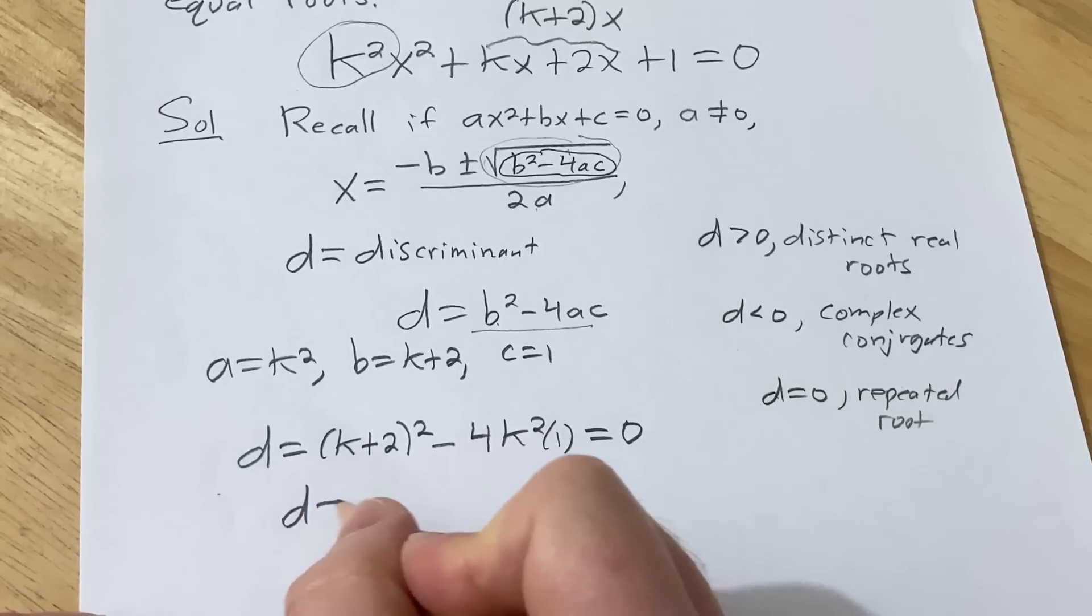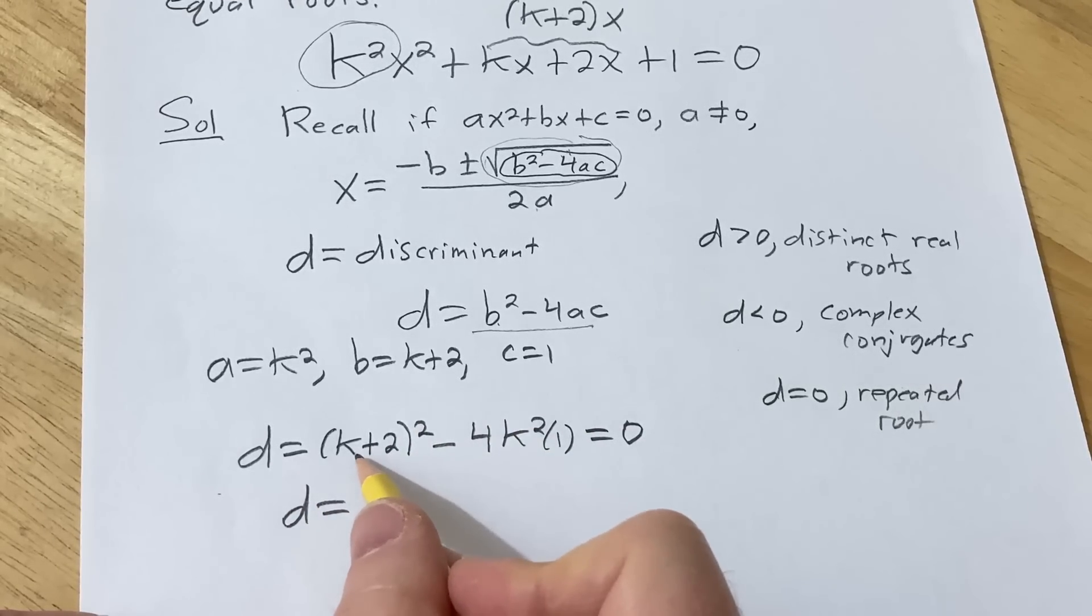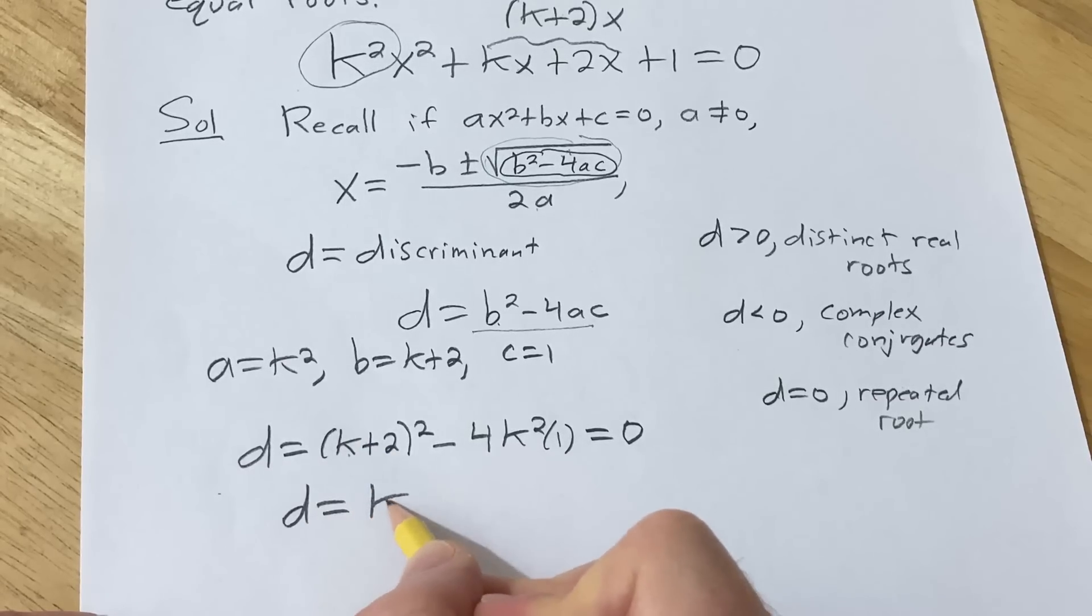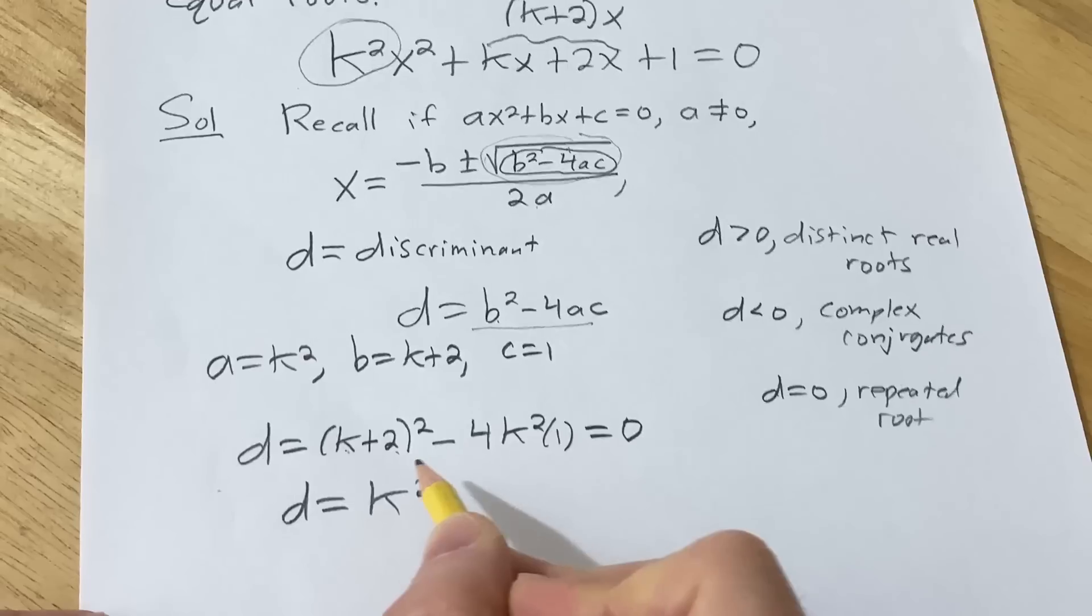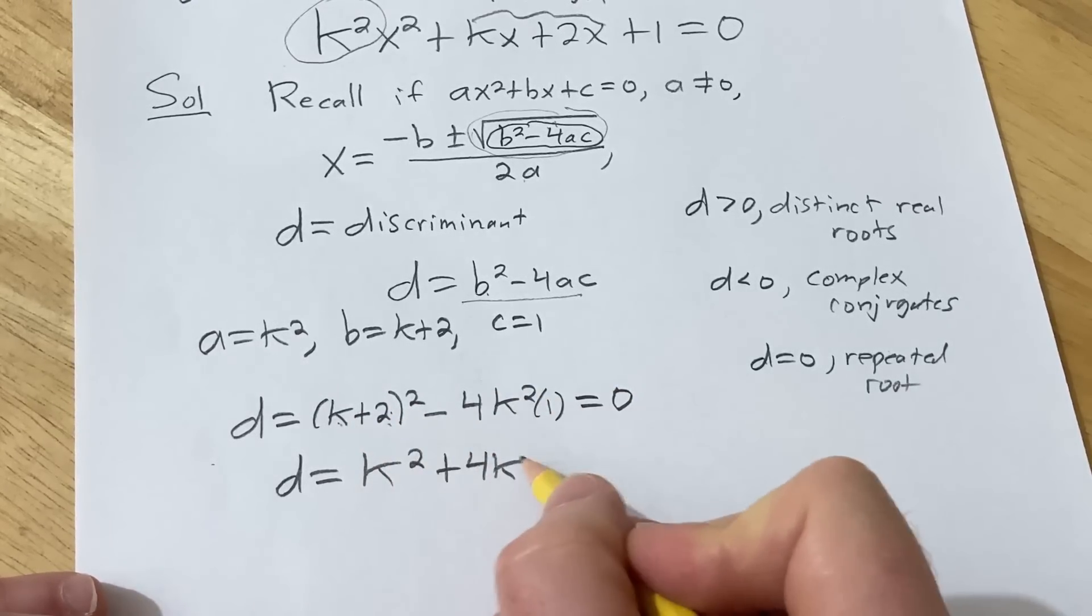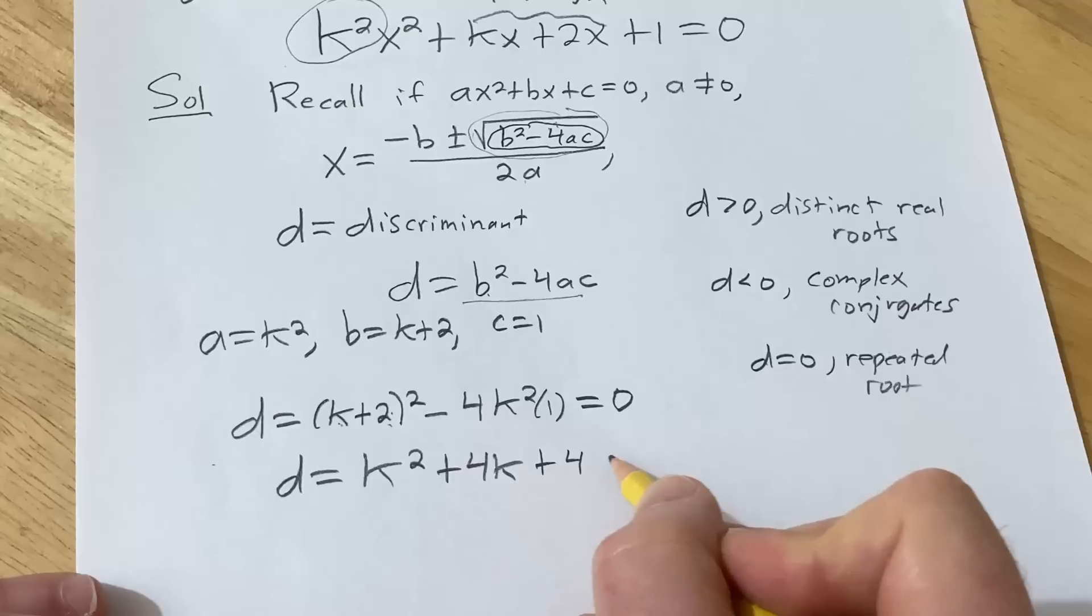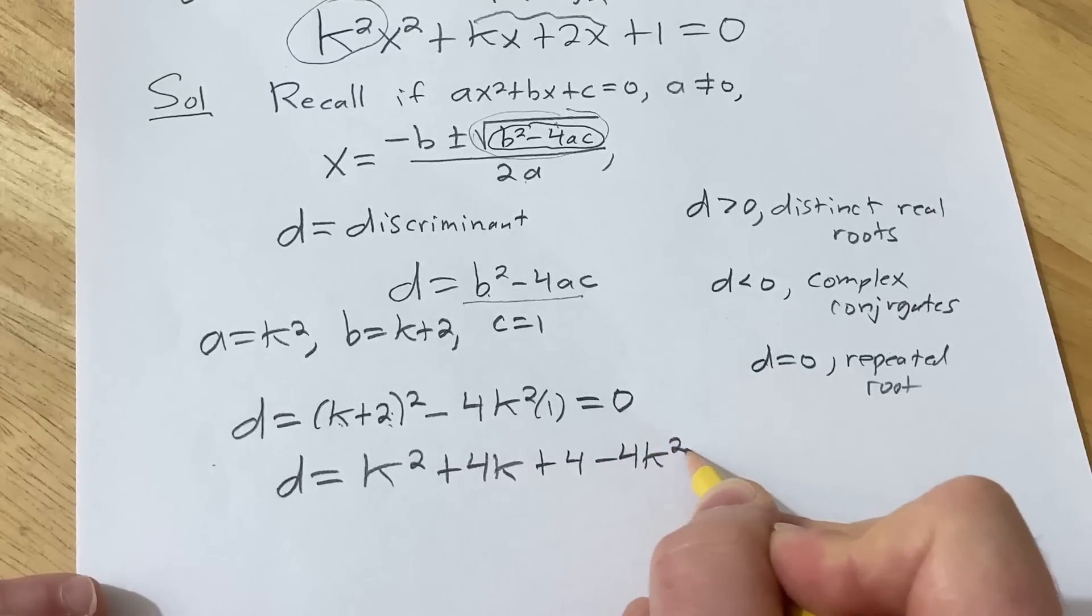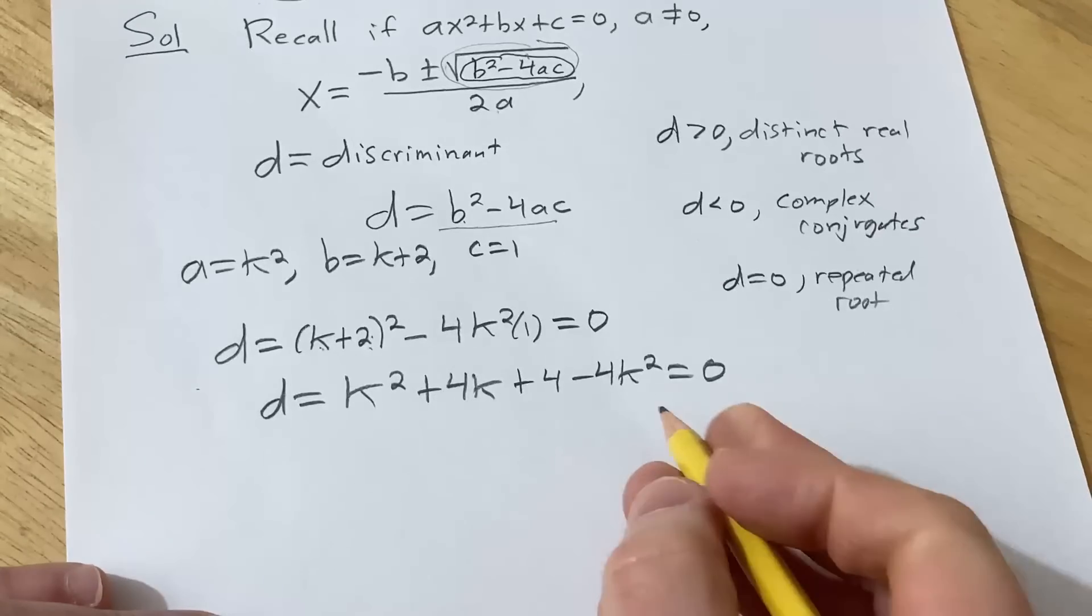So to multiply this out, there's a shortcut. You square the first one. You multiply these and double them. So 2 times k is 2k. Double it and you get 4k. And then you square the last one, so 4. And then minus 4k squared equals 0. Good stuff.